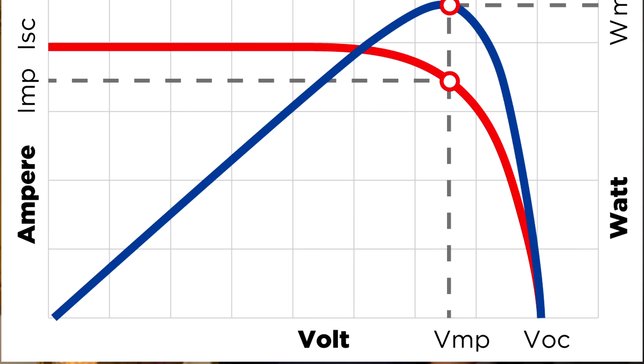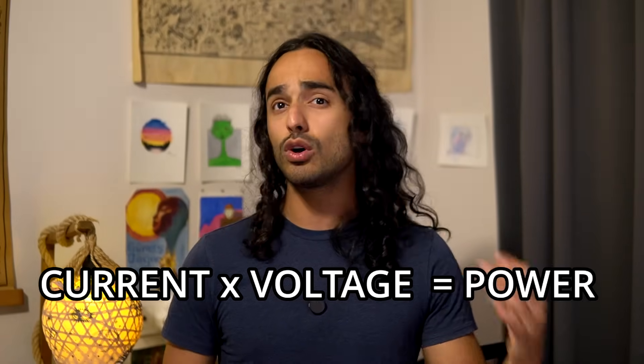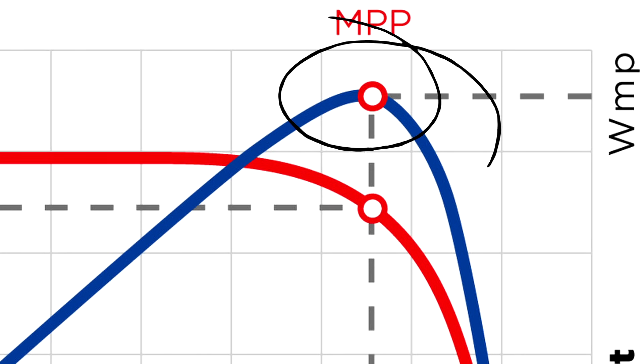When nothing is connected to the panel, it produces a voltage but the current is zero. So power is zero. As the load increases, voltage drops, as you can see in this graph. Since power is voltage times current, each panel has an ideal load for every condition. At that ideal current, voltage doesn't drop too much, so the power is maximized.